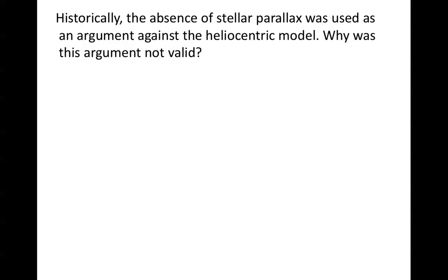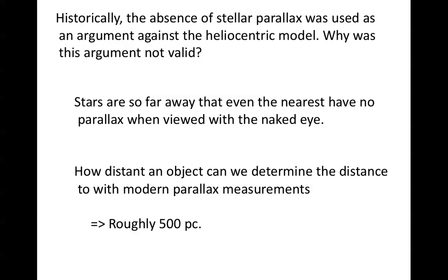Historically, the absence of observable stellar parallax was used by the Greeks as an argument against the heliocentric model: if the Earth were moving, you should see the stars shift. This argument was invalid because stars are so far away that even the nearest have no detectable parallax with the naked eye. With modern astronomical equipment, we can determine distances using parallax out to about 500 parsecs — somewhat less from the ground, but with precise satellites we can reach nearly 500 parsecs.